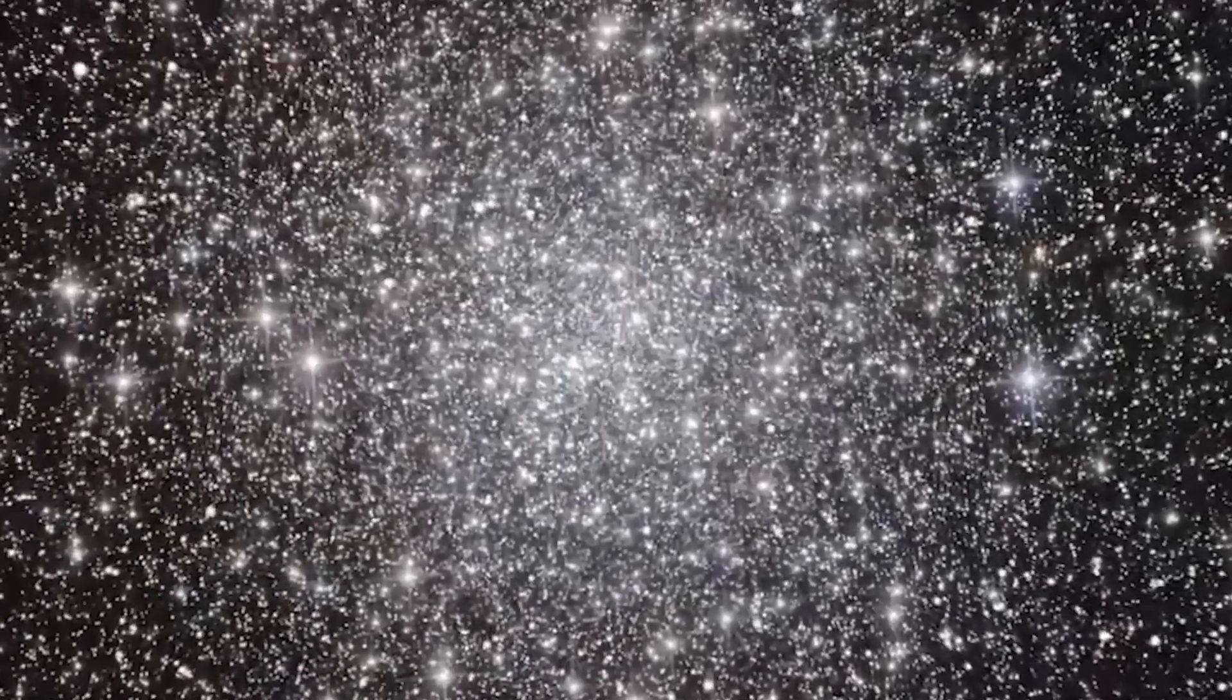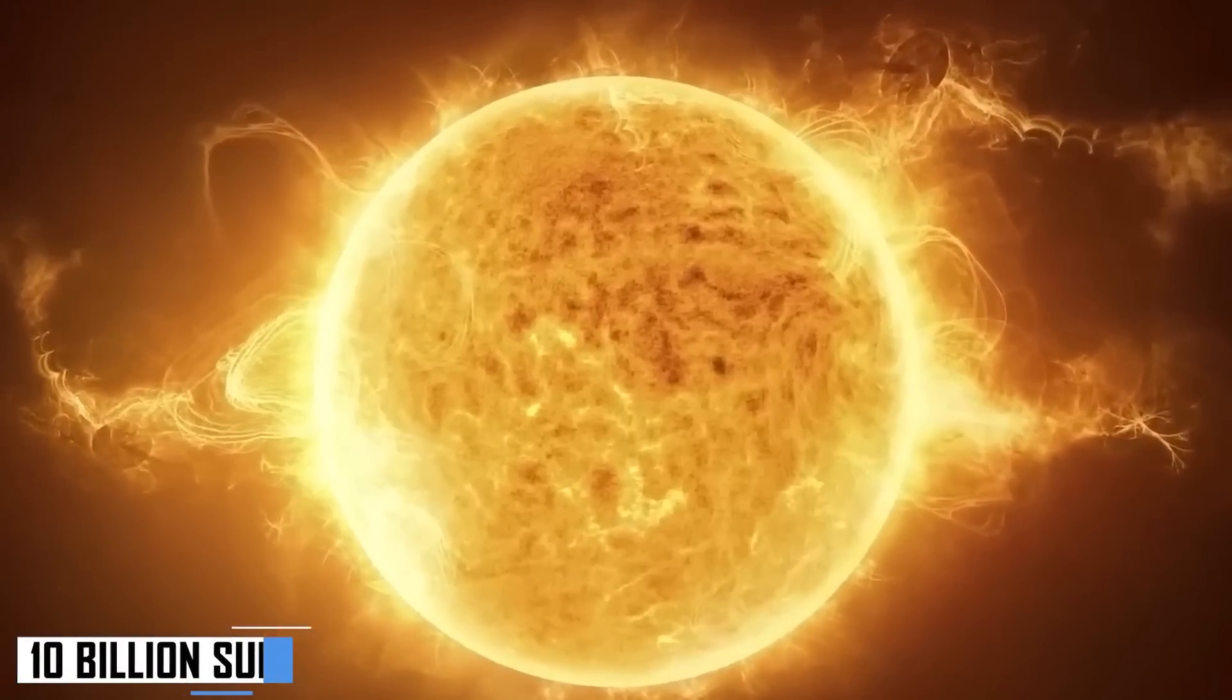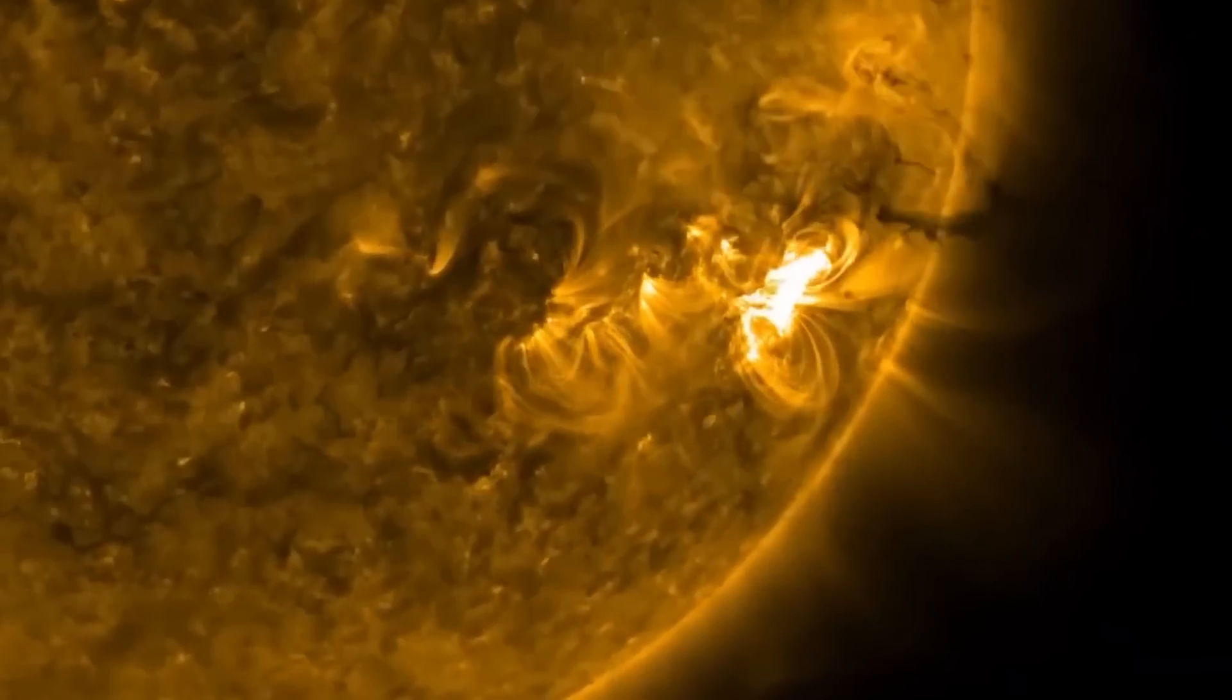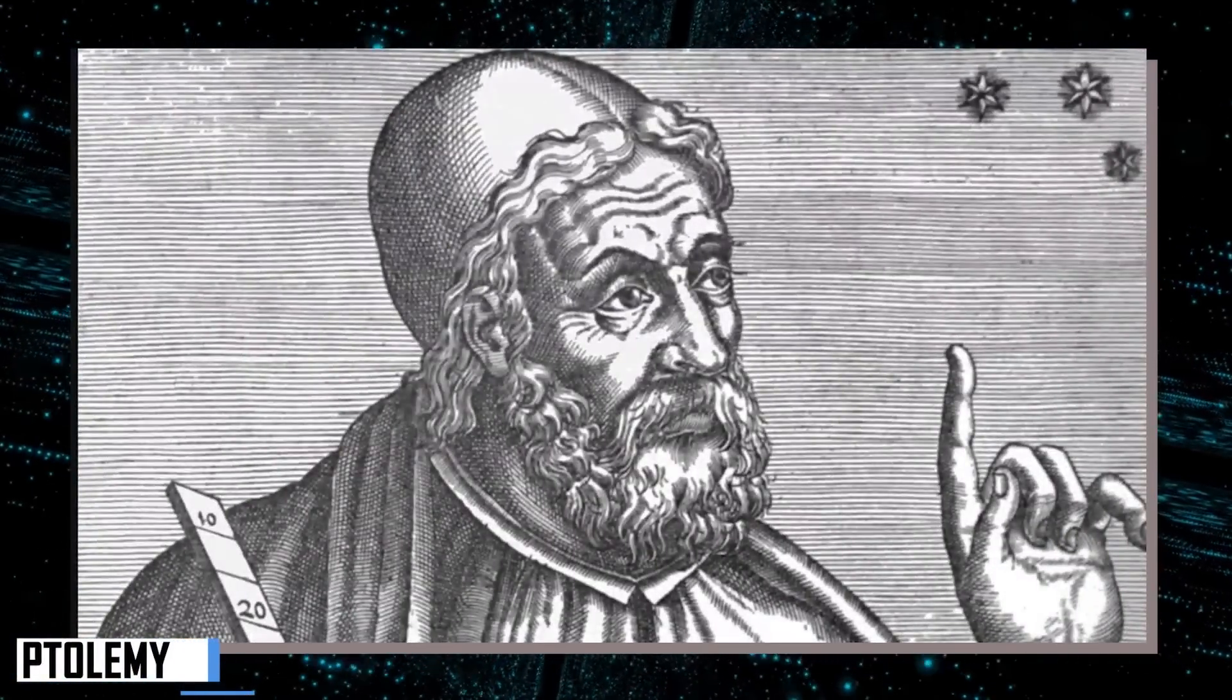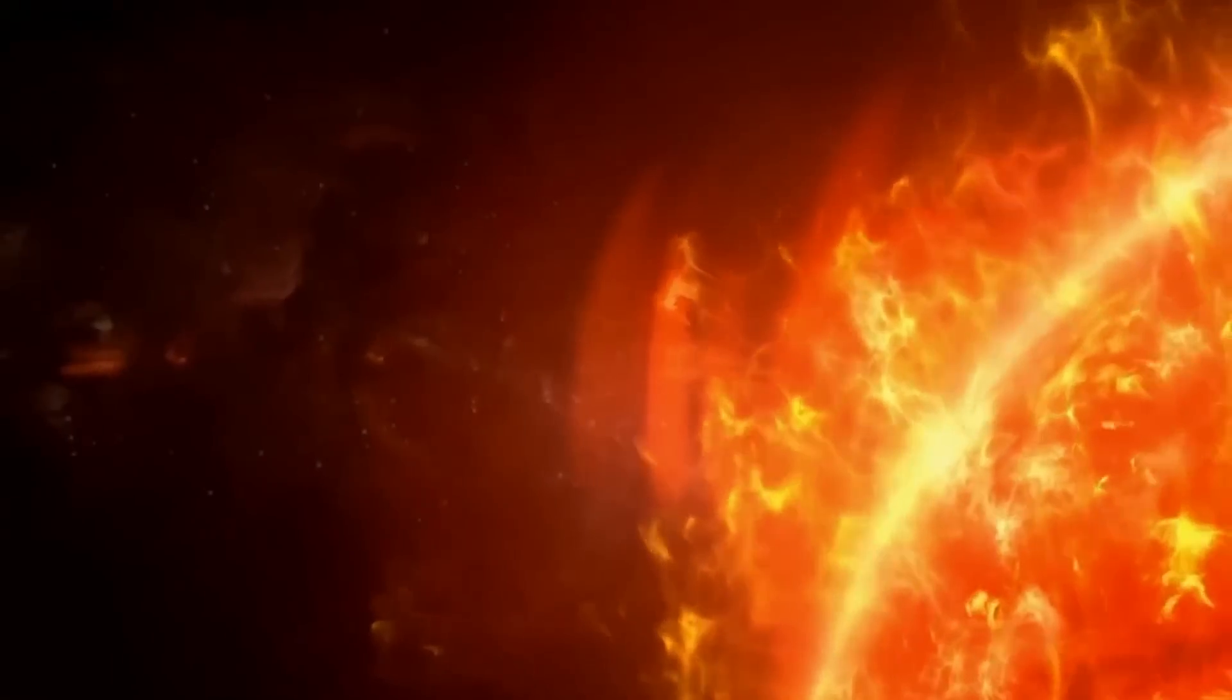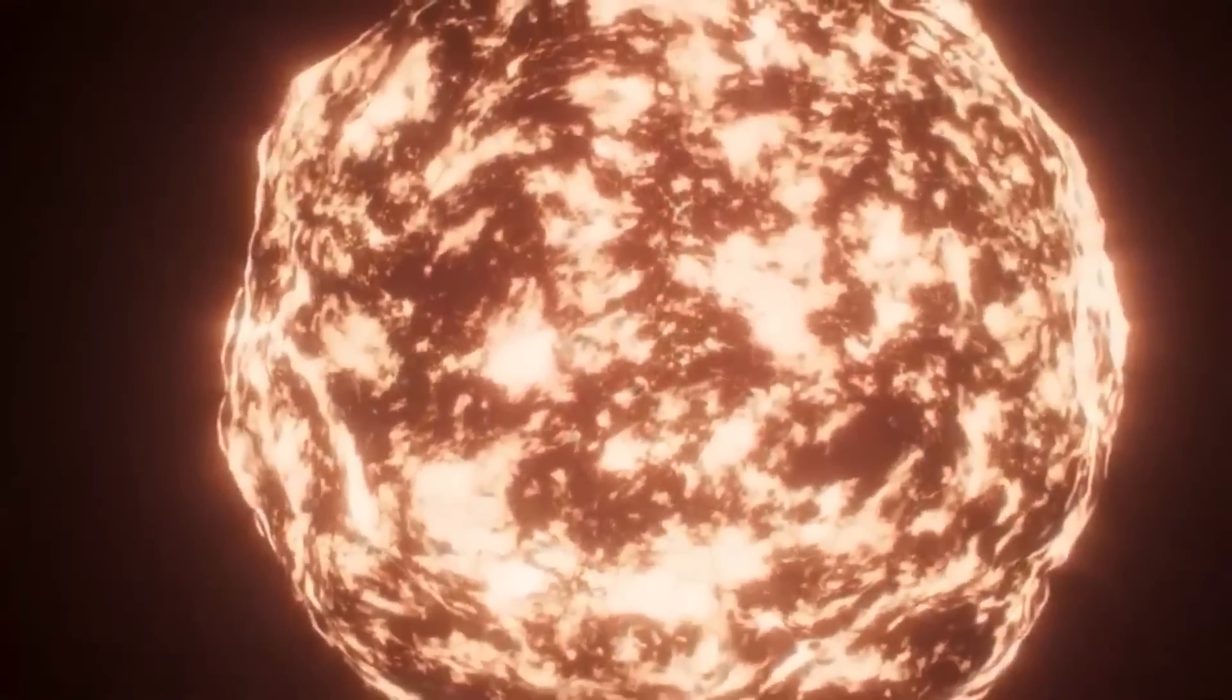Just one supernova explosion produces more than 10 billion suns. Betelgeuse has been described as having different physical characteristics throughout human history. Chinese astronomers in around 100 BC described it as having a yellow hue, but three centuries later, Greek scientist Ptolemy described it as having a healthy reddish complexion.